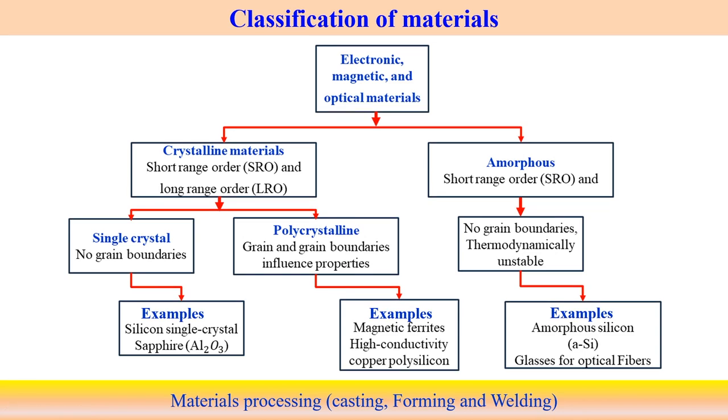The classification of materials specific to this topic includes electronic, magnetic, and optical materials. These materials fall into two basic categories: crystalline and amorphous. Crystalline material has both short-range and long-range order. Amorphous material has short-range order only, where the atomic arrangement is less than 100 nanometers following a certain order, but beyond that it cannot. That is why we categorize it as short-range order — amorphous materials.